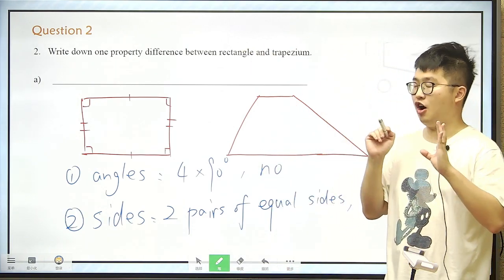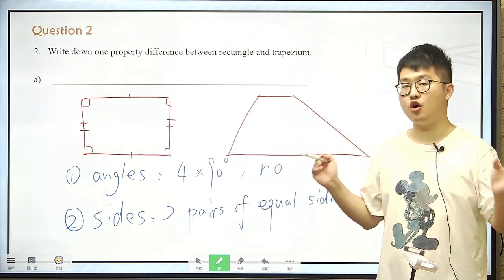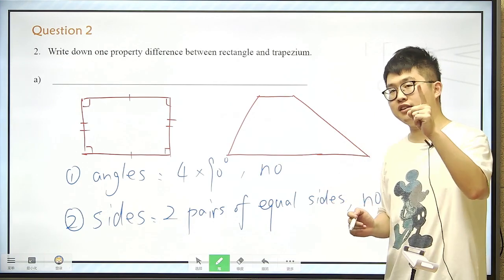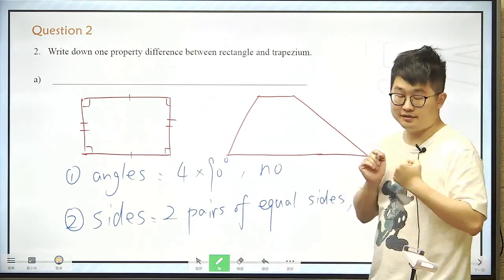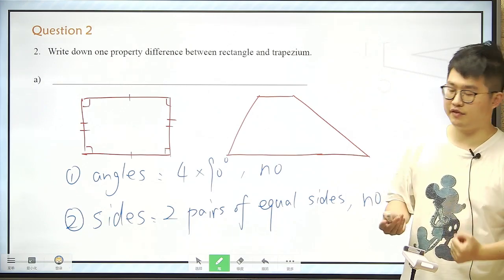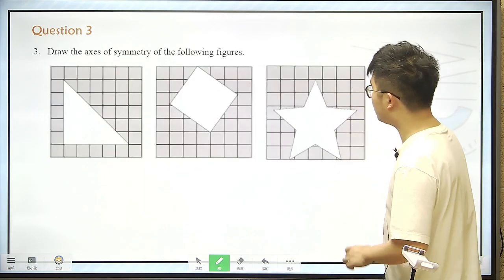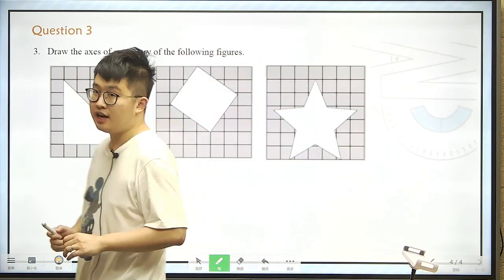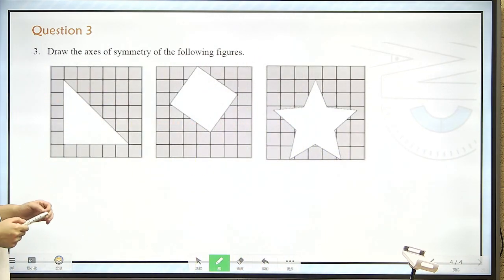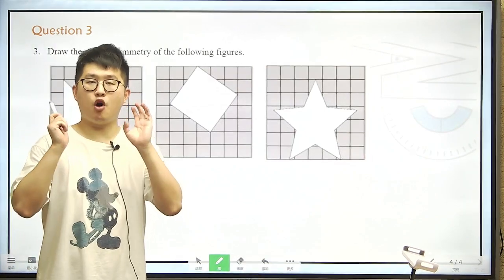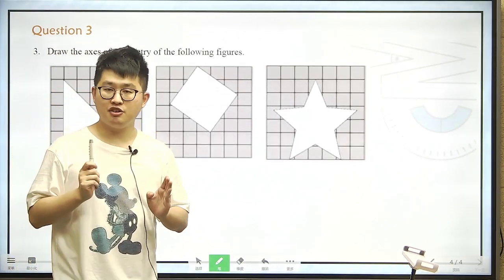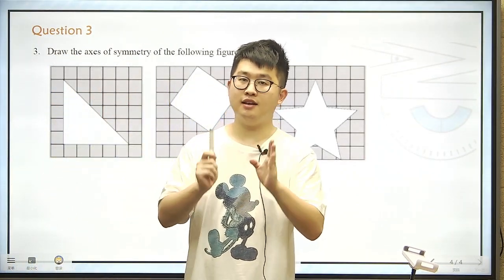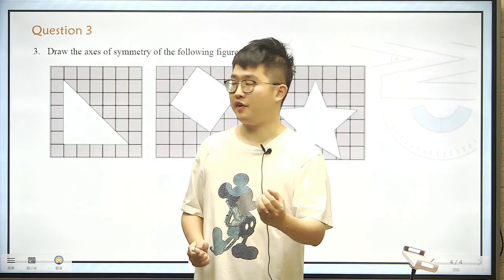So this is two main differences between a rectangle and a trapezium. But of course these are not the only two differences. There are more differences. So just write down the one you want to write, it's the one you prefer. So let's move on to the last one.